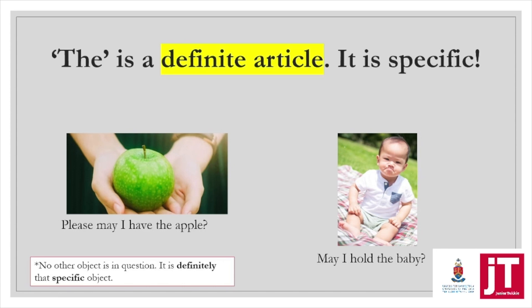'Please can I have the apple?' — it's this one specific apple. Perhaps they only want the one green apple. 'May I hold the baby?' — think of parents who only have one child. Everybody knows what noun is in question. That's very different from 'can I hold a baby?' which means I don't mind — I'll hold any baby. Such a small word, but it really does make a major difference in the sentence. So a, an, and the — those are your articles.